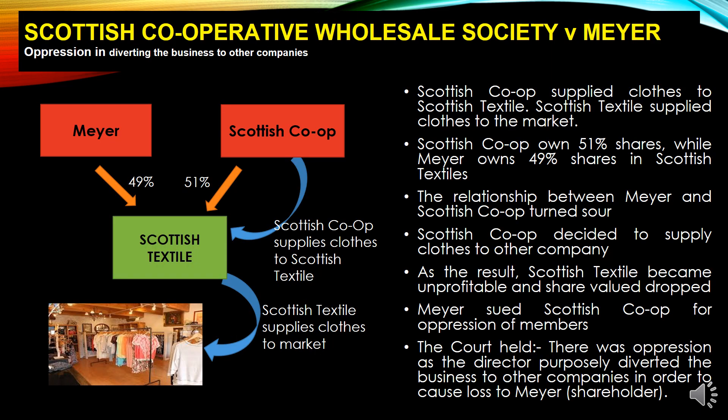Now, oppression in diverting business to another company: if a company used to get profit and then the directors make a decision to divert the business to other companies, this is considered oppression towards the members. Why? Because when the business is diverted, the profit made will be lesser, and when there is lesser profit, the benefit gained by the members is also lesser. In Scottish Cooperative Wholesale Society v Mayors, you can see the diagram showing the relationship.